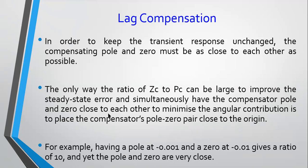The only way you can have the ratio Zc to Pc be large — and you want it large because this ratio decides by what factor you're reducing your error — is while also keeping the pole and zero as close as possible to each other to maintain your transient response. These two conditions are met if you place your pole and zero very close to the origin. The closer to the origin, the better you can meet both conditions: Zc to Pc should be as high as possible, while both are very close to each other and very close to the origin.